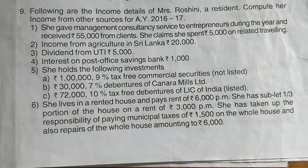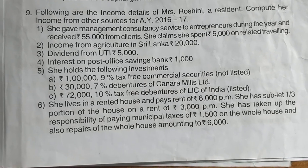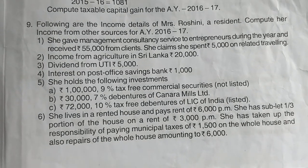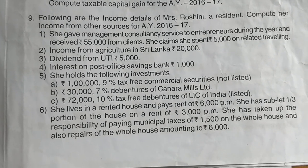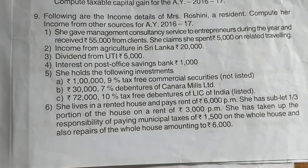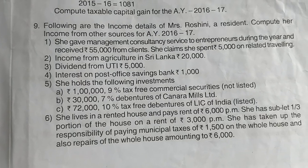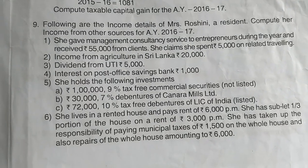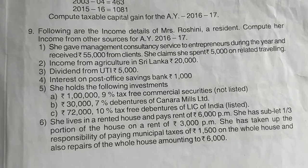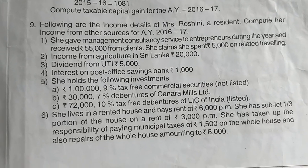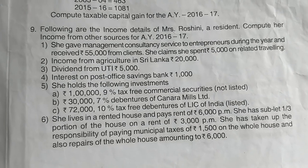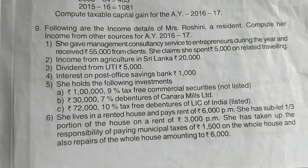This is a 2017 question paper which is given for 14 marks for B.Com 6th semester. You need to change the assessment year to 2019-20 instead of 2016-17. The question reads: the following are the income details of Miss Roshini, a resident. Compute income from other sources for the assessment year 1919-20.